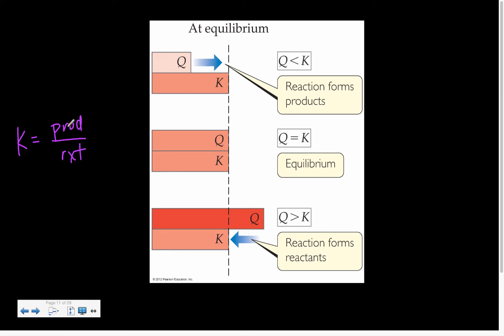So if Q is less than K, that means we need to increase. If Q is less than K, we need to make it bigger, and that means make more product. Which is what this scenario is saying.